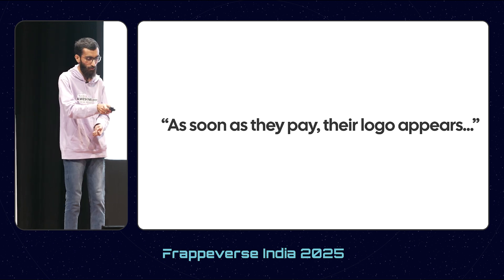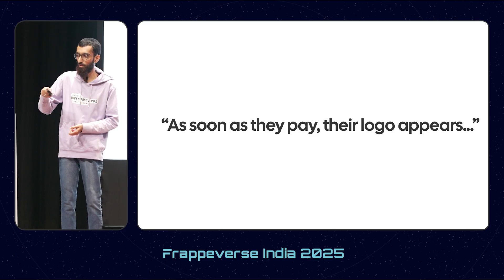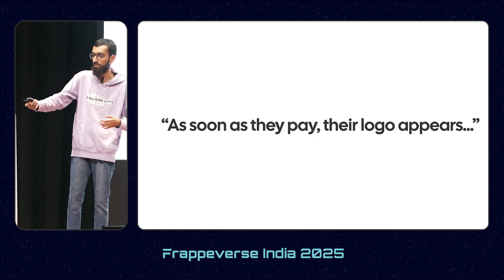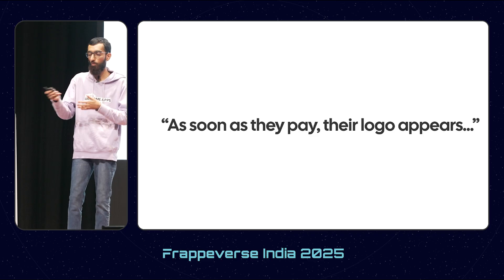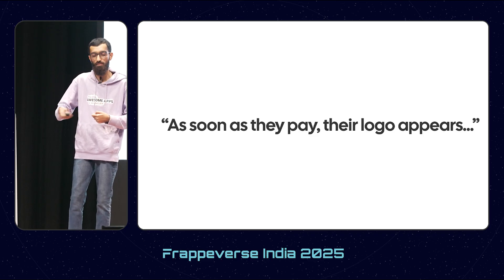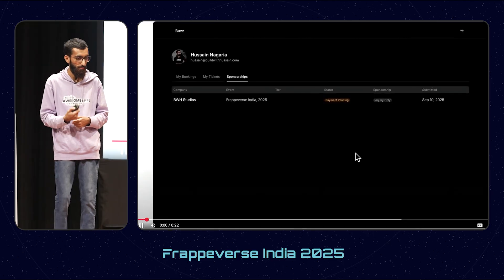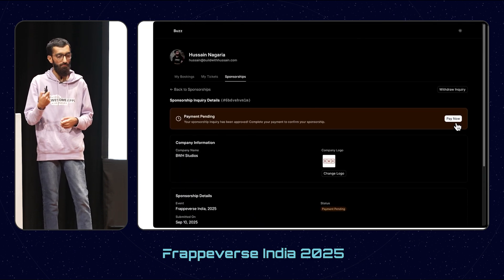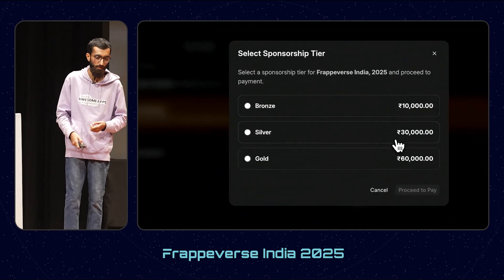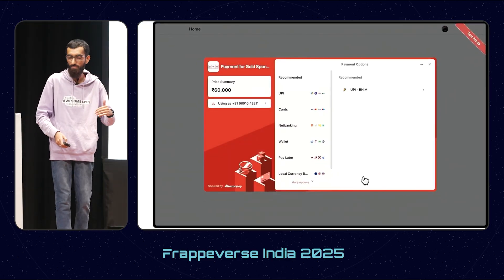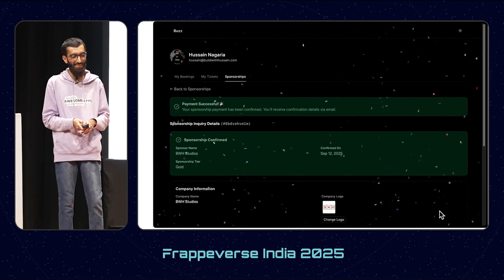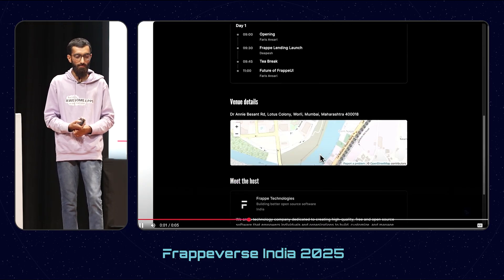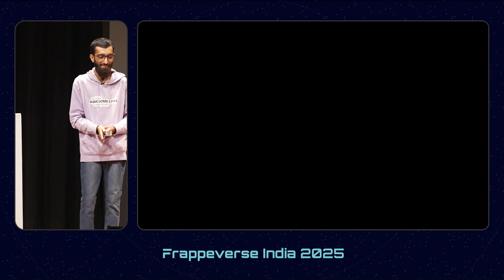The second thing Palkan said — I copied it verbatim — as soon as the sponsor pays, their logo should appear. That smooth the process should be. Right now it's back and forth: you submit an inquiry, get a sponsorship deck, talk to people. They were generating payment links and sharing them across. So I thought, let's fix it today. I created a sponsorship dashboard where you can see your inquiries and click on one. Once approved it shows payment pending, you can pay now, select a sponsorship tier — these are also dynamic per event. And then you pay. Too much confetti! But the logo appears as soon as they pay. Happy Palkan.